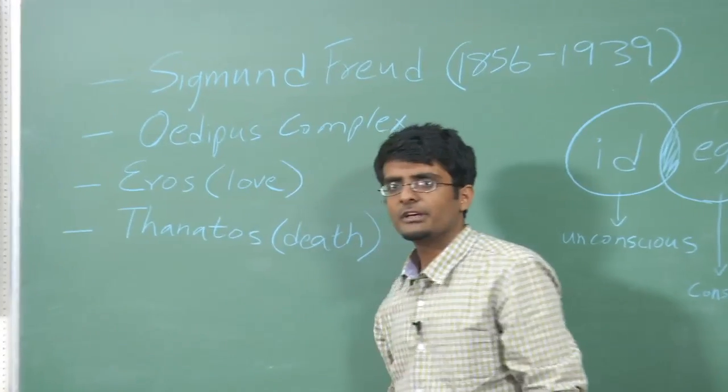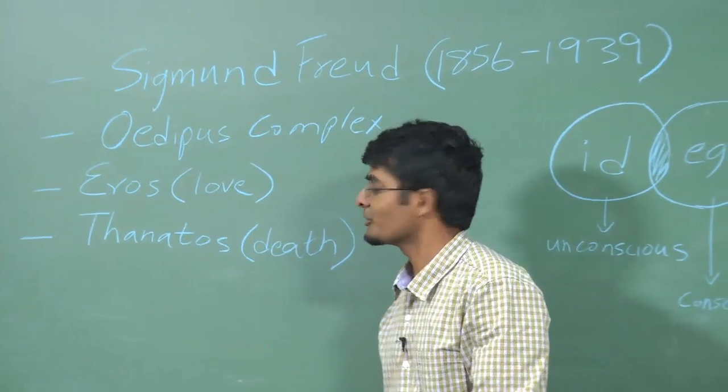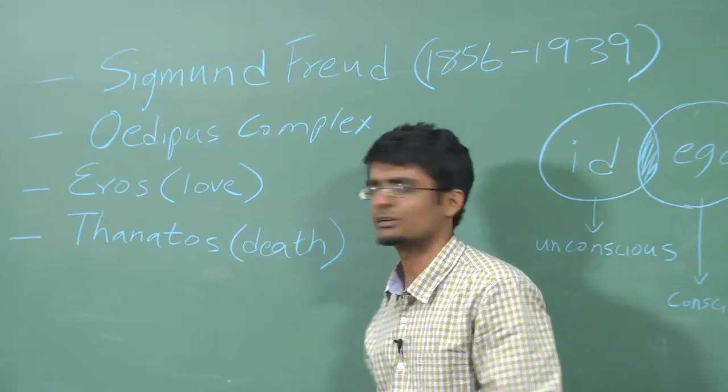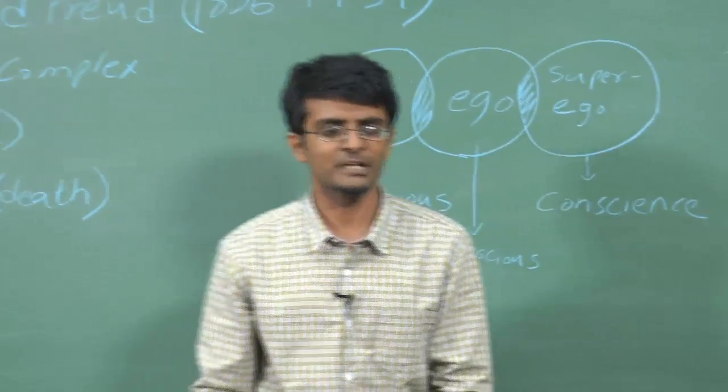Another key Freudian idea is that of the libido, which can be understood as the energy drive associated with sexual desire. In classic Freudian theory it has three major stages of focus including the oral, the anal, and the phallic, derived from the five psychosexual stages of development Freud originally proposed. The libido in the individual is part of a more generalized drive which Freud would later call eros — derived from the Greek word for love, implying the life force — complemented by thanatos, derived from the Greek word for death, implying the death instinct.